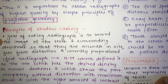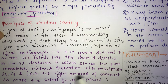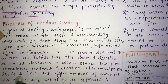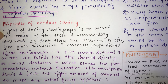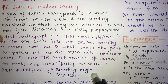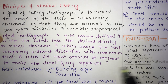H.M. Worth defined an ideal radiograph as one which has a desired density — that is, the overall darkness — shows the part completely, without any distortion, with maximum details, and with the right amount of contrast to make the detail fully apparent. The principles of shadow casting aim to achieve this ideal radiograph, and there are two basic techniques: the bisecting angle technique and the paralleling technique.